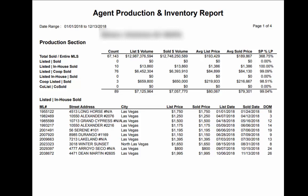A realtor will only be able to see their own production, whereas a broker or office manager will be able to see their production as a realtor and the production of their office. In both cases you will be able to determine whatever time frame you would like to see.